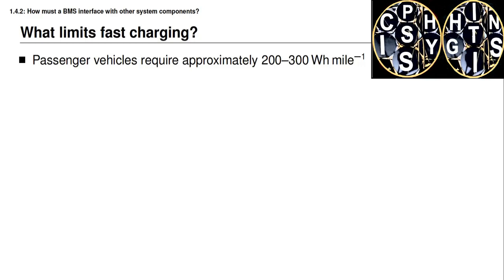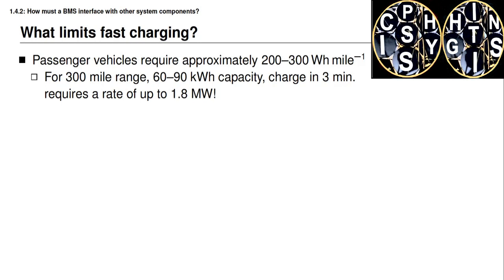Let's consider a thought experiment about what limits the rate at which electric vehicles can be recharged. Most passenger vehicles of moderate size require between 200 to 300 watt-hours per mile traveled. So if we desire a 300-mile range, the battery pack must have between 60 to 90 kilowatt-hours of capacity. If we're to charge the entire battery pack in three minutes — roughly the time it takes to fill a gasoline tank — it would require power transfer at the rate of about 1.8 megawatts, which is an enormous amount of power.